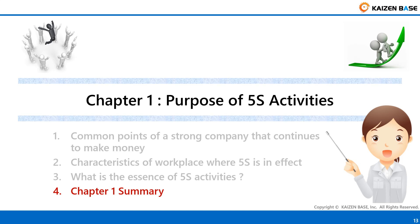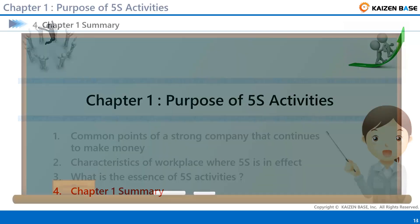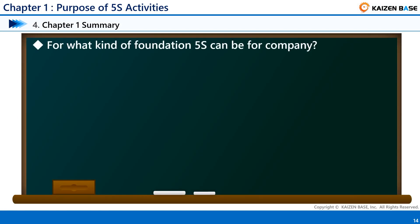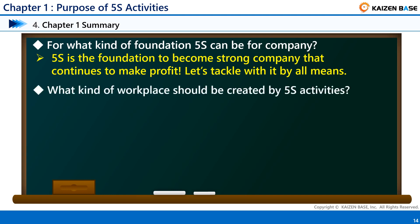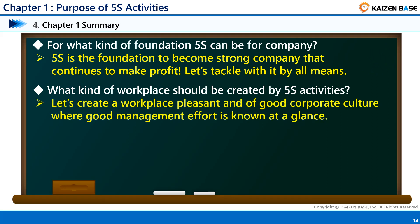Finally, let's summarize Chapter 1. Question 1: For what kind of foundation can 5S be for a company? Answer: 5S is the foundation to become a strong company that continues to make profit. Let's tackle it by all means, without dismissing 5S as trivial. Question 2: What kind of workplace should be created by 5S activities? Answer: Let's create a pleasant workplace of good corporate culture where good management effort is known at a glance.